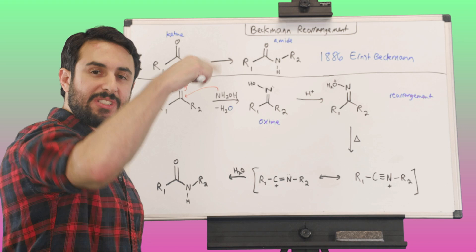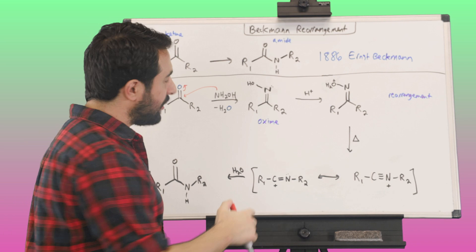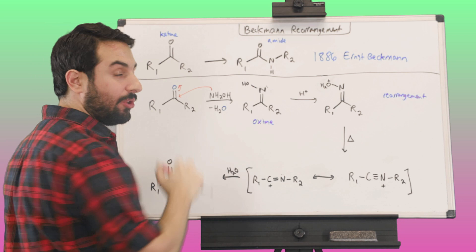...and we've got actually what's called an oxime. So this functional group is called an oxime, where we've got C double bond N with a hydroxyl on the nitrogen.